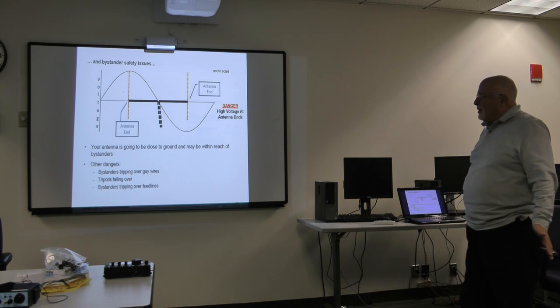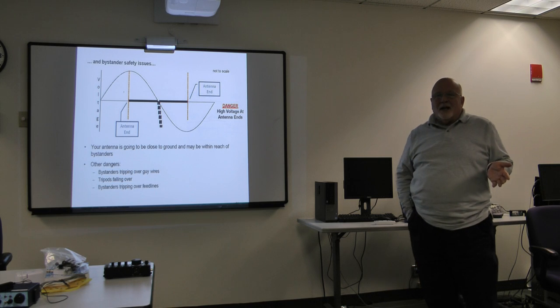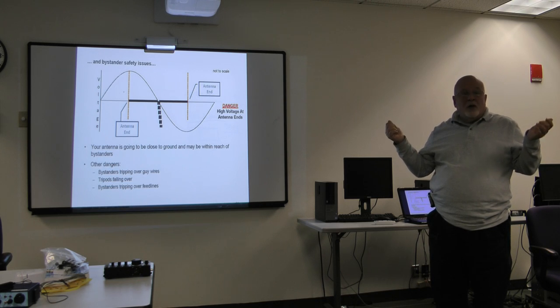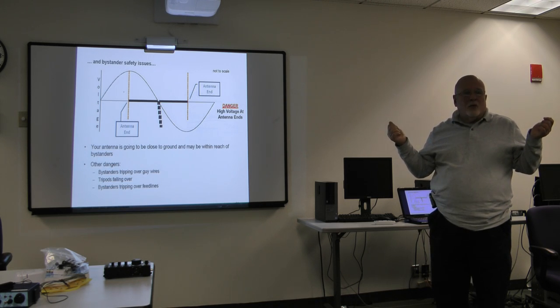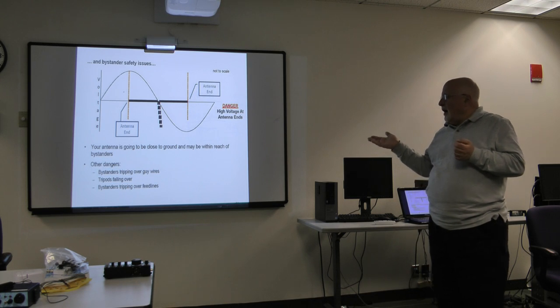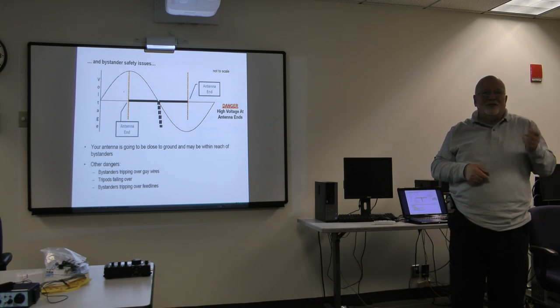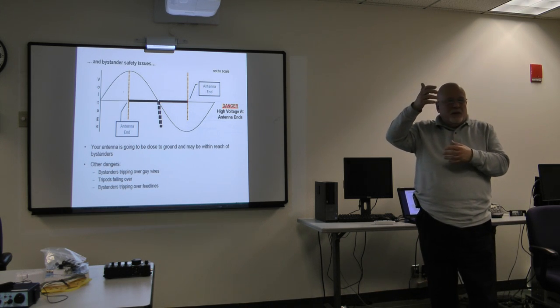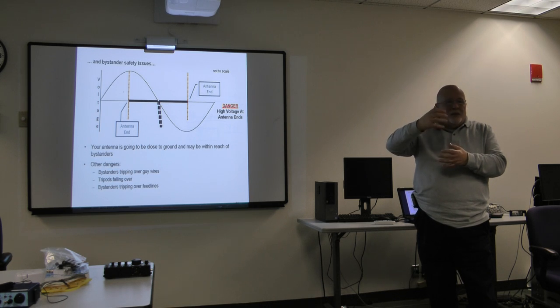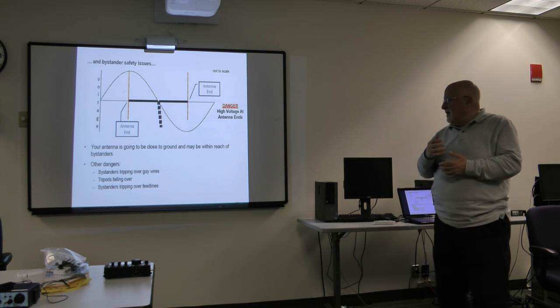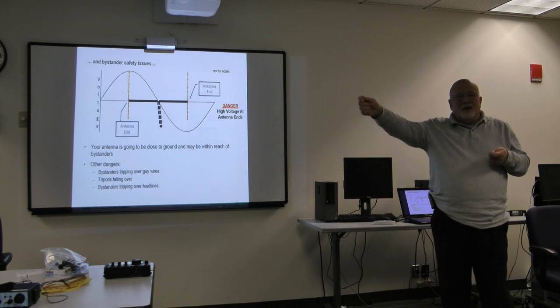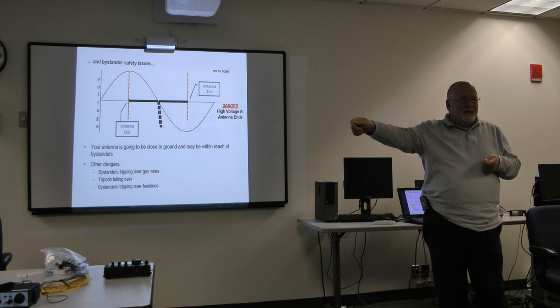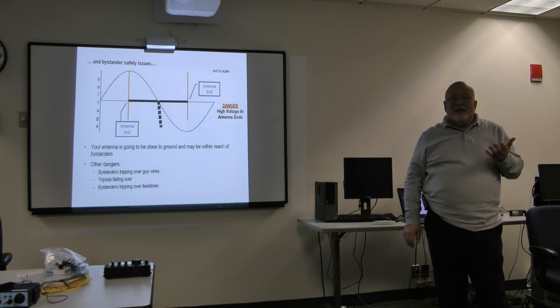Other dangers, if you have guy wires, because some of these you're going to want to guy, especially those horizontal dipoles, you may want to guy them in strong winds. If you have guy wires, your spectators can trip over them. If you've got a big tripod like the buddy pole uses, it's a fairly substantial tripod that can tip over and onto somebody. And of course you've got a feed line usually running along the ground to the antenna and you can have bystanders tripping on it. So you really have to be careful. If you're going to go down to the beach and it's a busy beach, you've got to consider that.